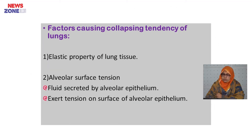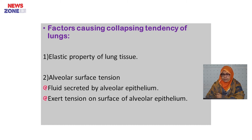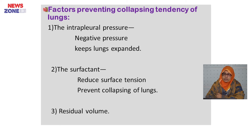What are the factors that cause collapse of the lung? First is the elastic property of the lung tissue, and second is alveoli surface tension, produced by fluid secreted by the alveoli epithelium. What are the factors that prevent collapse? These are: intraplural pressure, which is negative and keeps the lung expanded; surfactant, which reduces surface tension and prevents lung collapse; and third, the residual volume.